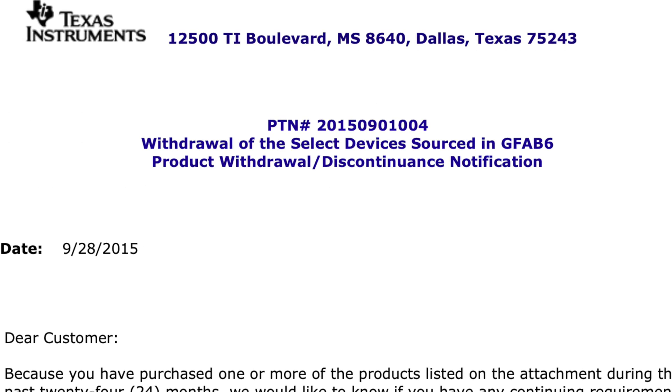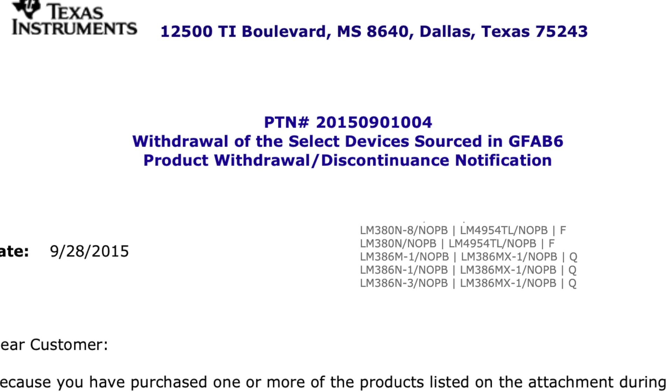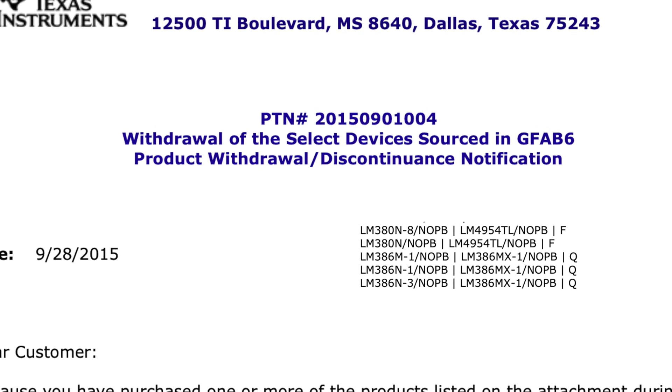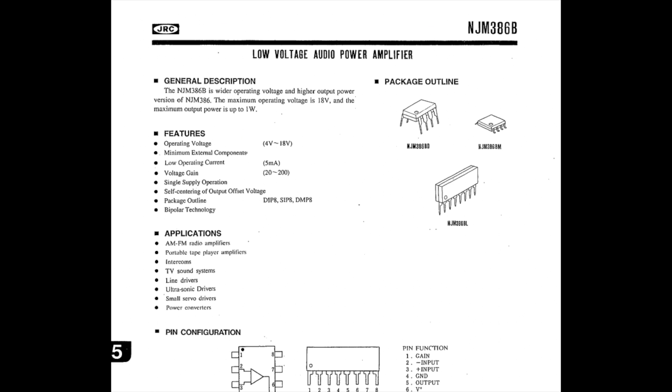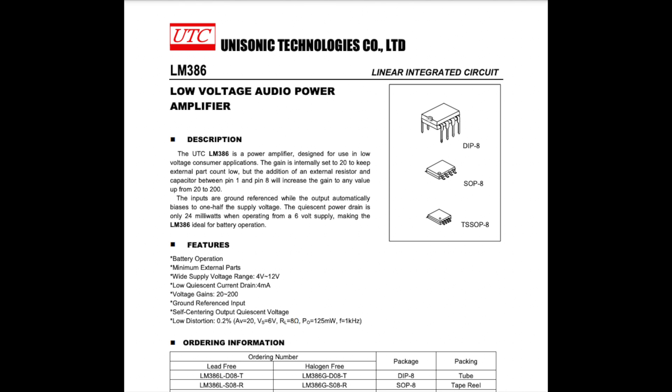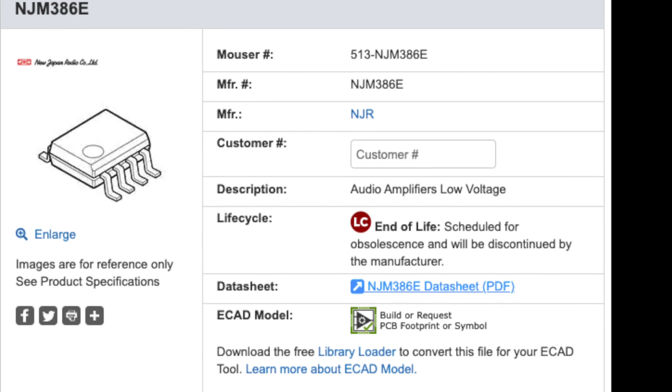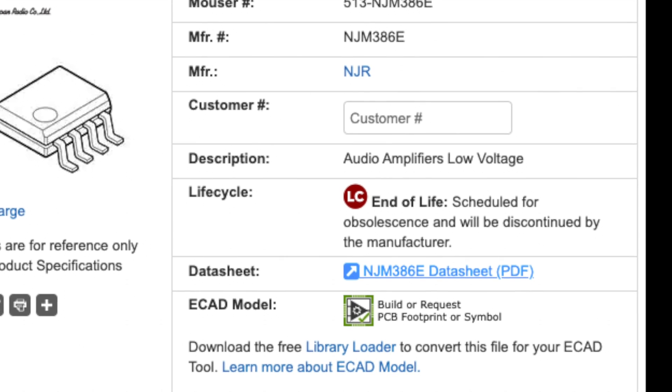In 2015, Texas Instruments announced that they would discontinue the LM386 and the LM380. There are some alternate manufacturers such as New Japan Radio Company and Unisonic Technologies, but New Japan Radio's NJM386 is also marked as obsolete now.